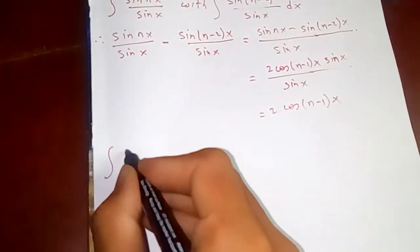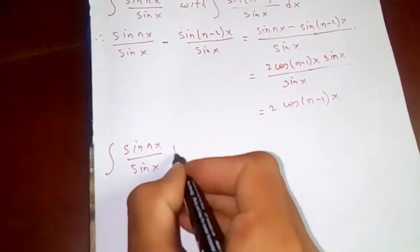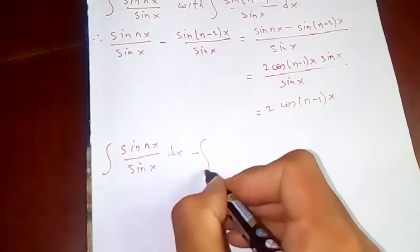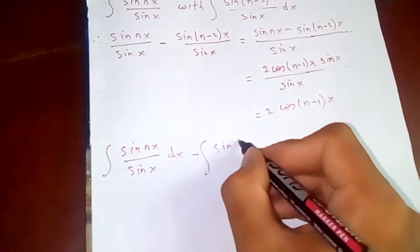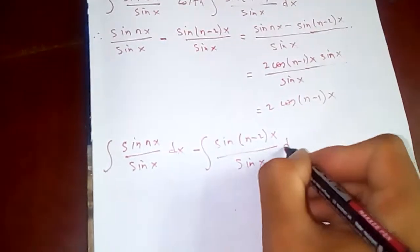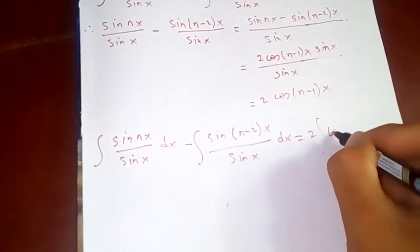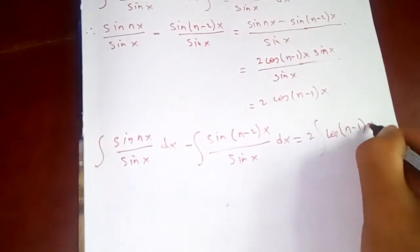If I integrate, what do we get? Integral of sin^n x over sin x dx minus integral of sin^(n-2)x over sin x dx, which is equal to 2 times integral of cos^(n-1)x dx.